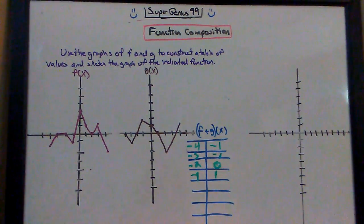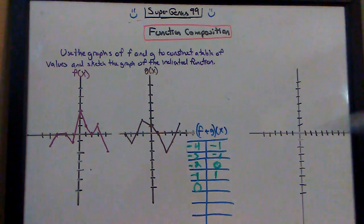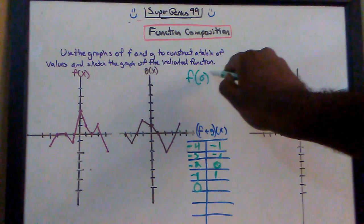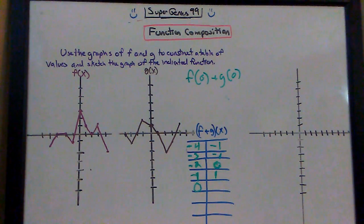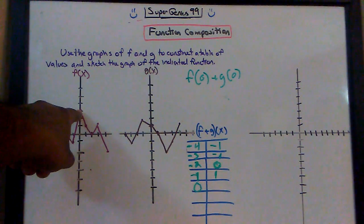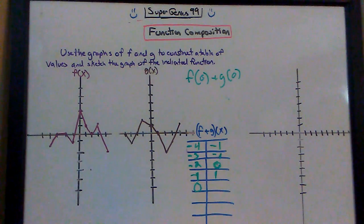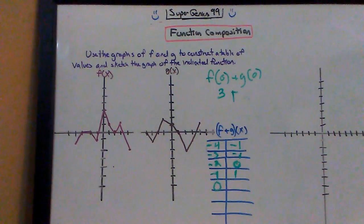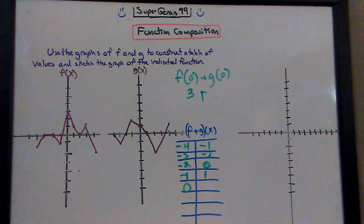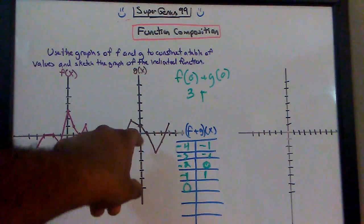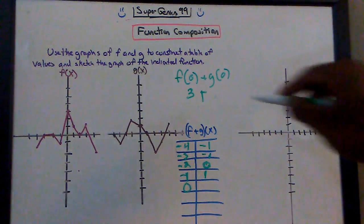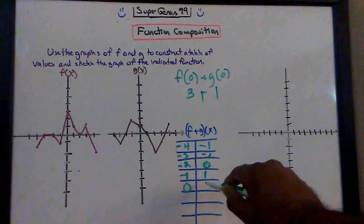Now we're going to do f plus g where x is 0. What is f of 0 plus g of 0? When x is 0 on the f function graph, y is 3. When g is 0 on the g graph, y is 1 right there. So 3 plus 1 is 4.